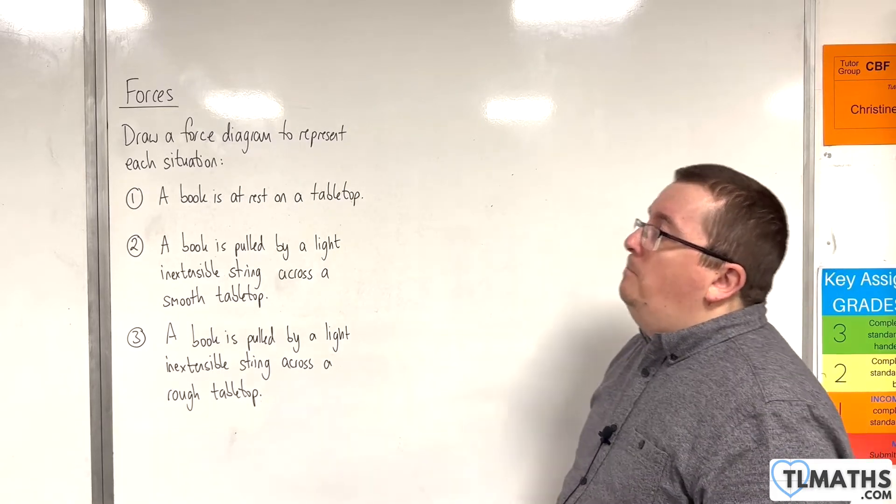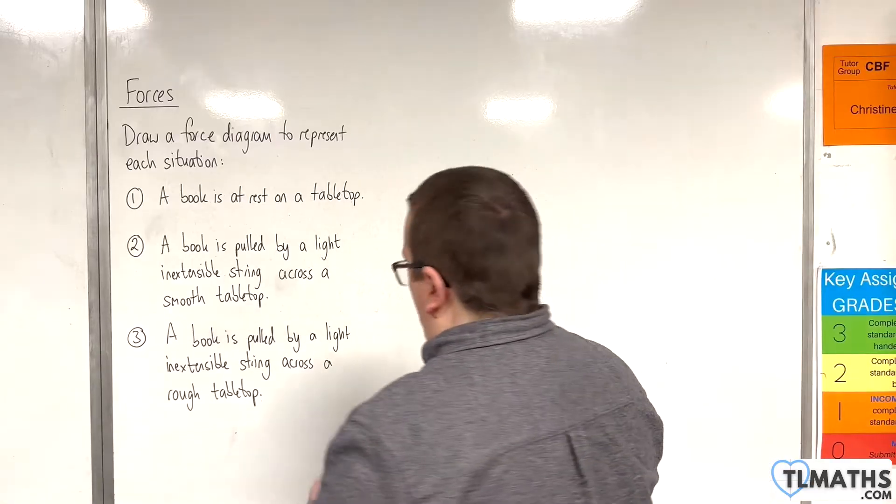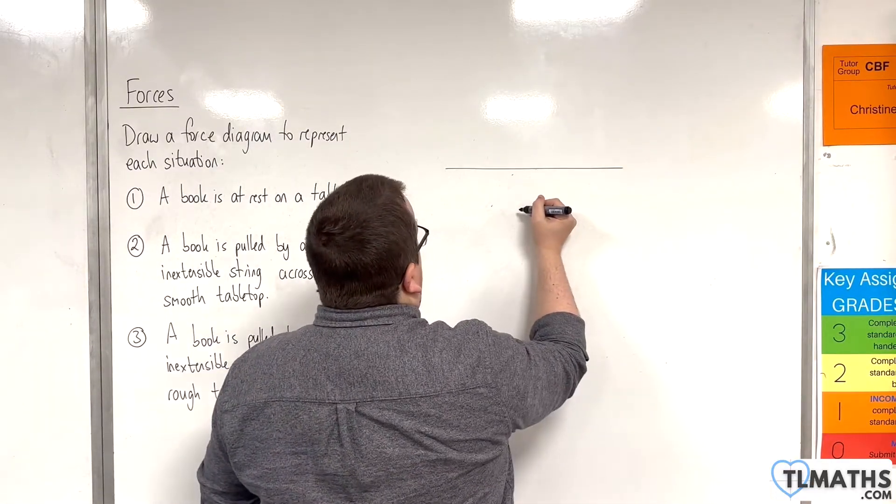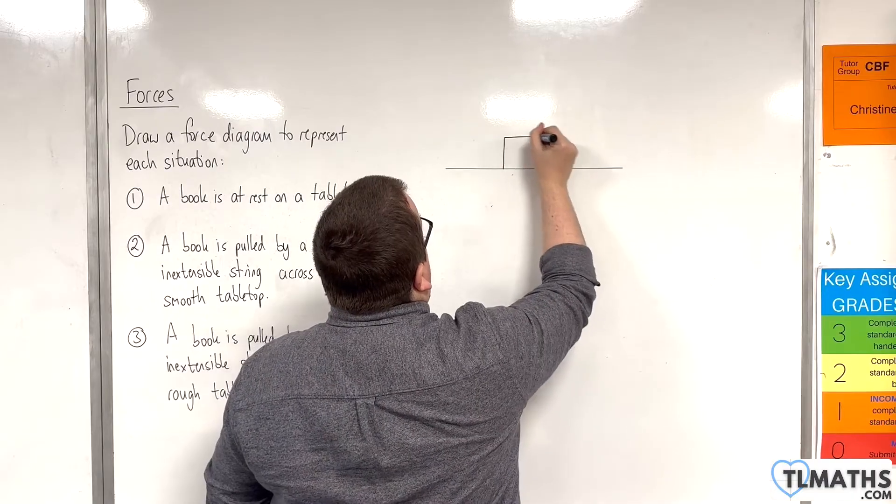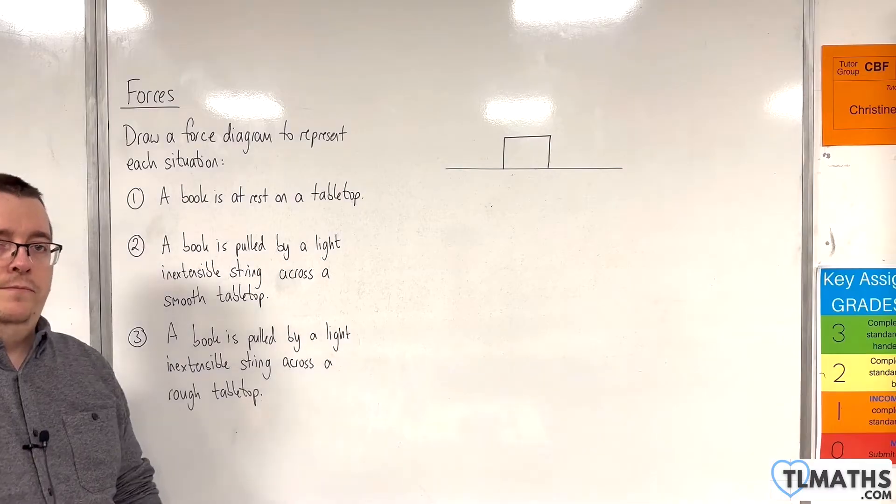For number one we've got a book that is at rest on a tabletop. So I would draw the tabletop and here is the book. And I'm going to model it as a rectangle.